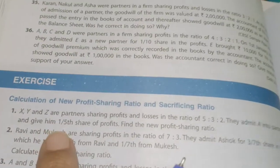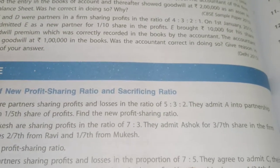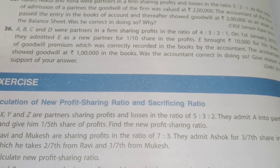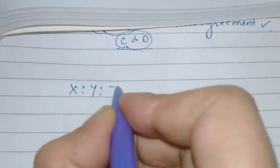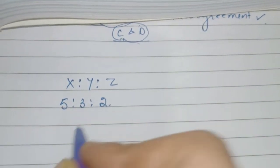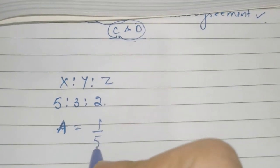The first question from your TS Garival book: X, Y and Z are partners sharing profit in the ratio 5:3:2. They admit A into partnership and give him 1/5th share of the profit. Calculate the new ratio. First, note down the information: X, Y, Z are partners in ratio 5:3:2, and they admit A into partnership. A's share is given as 1/5th.